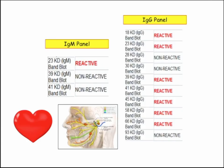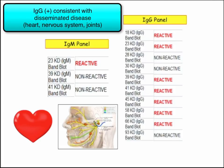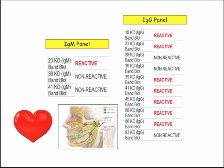Here is a typical test outcome. For IgM, you can see in this one it's reactive on only one band, not two. But IgG is positive across the board. So this patient probably has an infection that's already getting into the disseminated phase — and they love Bell's palsy.